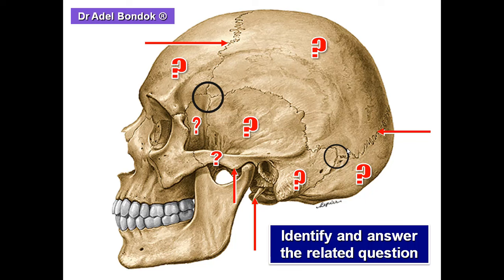This area is the asterion. In the newborn skull, the pterion is the site of the anterior lateral fontanelle, and the asterion is the site of the posterior lateral fontanelle. The anterolateral and posterolateral fontanelles ossify at the age of three months.